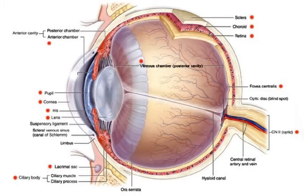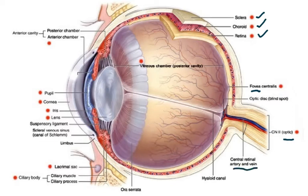For O Level, the key structures to know are: sclera, choroid, retina, fovea, optic nerve, retinal artery and vein, ciliary body, suspensory ligaments, lens, iris, cornea, and pupil. That is all you need to remember — don't get overwhelmed by the complexity of the full diagram.